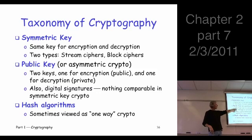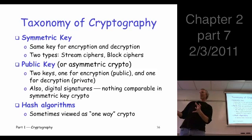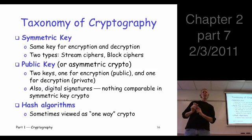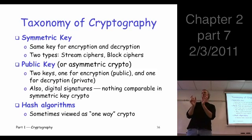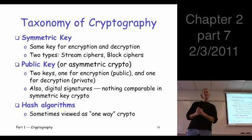With public key cryptography, or asymmetric cryptography, the asymmetry is that there are two different keys — one key to encrypt and one key to decrypt. These keys are related to each other; they sort of come in pairs. You generate the public and private key together.